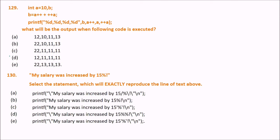The answer is 22. A is 10; ++A makes it 11. Since A++ is a post-increment operator, it will not be incremented within the expression and remains 11. So 11 plus 11 gives B equal to 22.